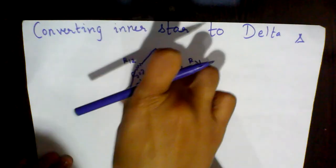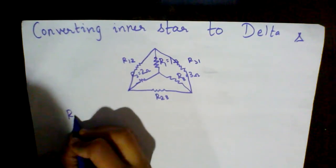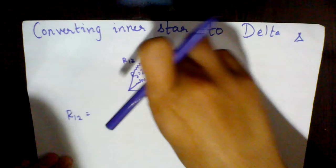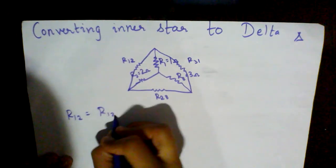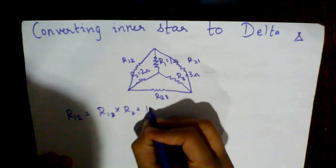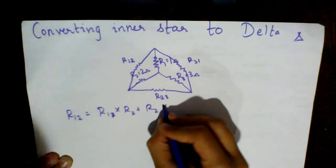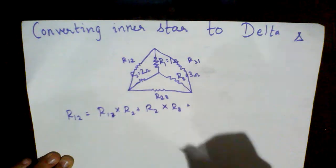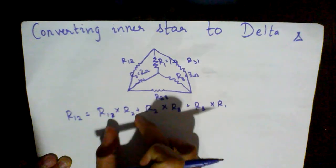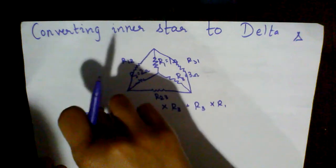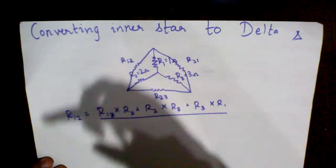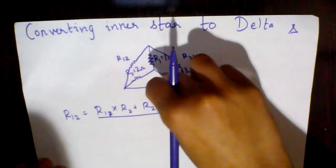So for R12, you take all the resistances: R1 into R2 plus R2 into R3 plus R3 into R1. The multiplication order doesn't matter - you can write R2 into R1 or R1 into R2. Then divide by R3.